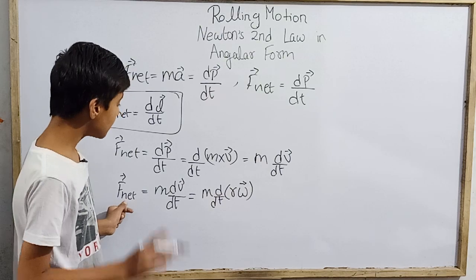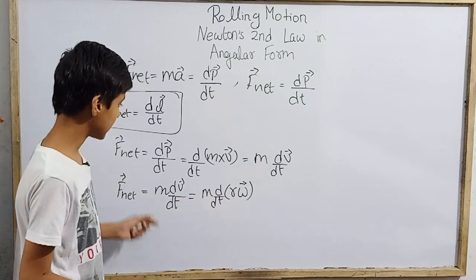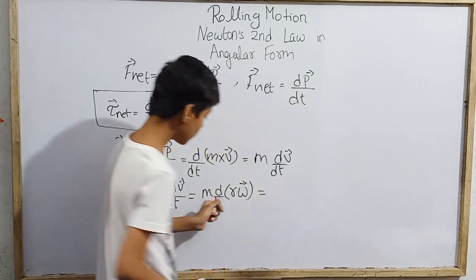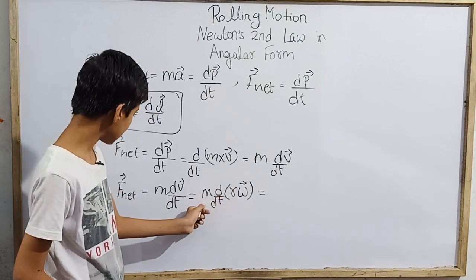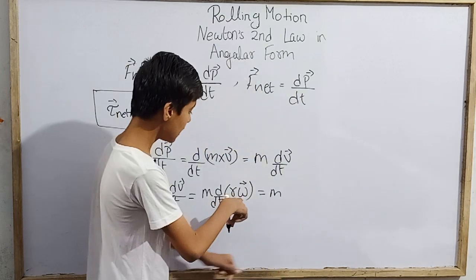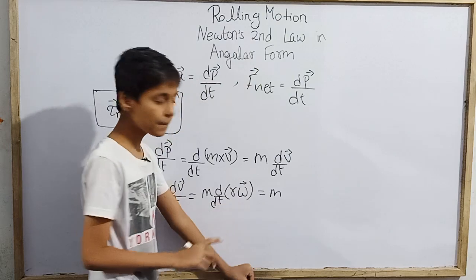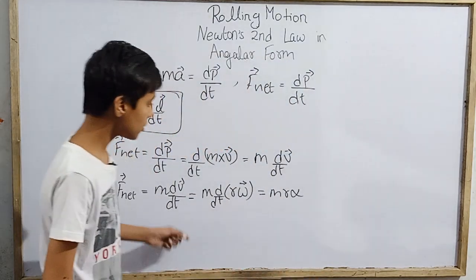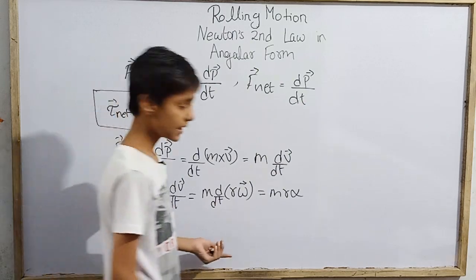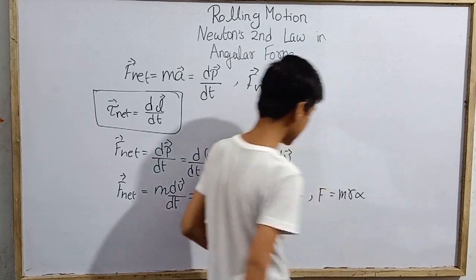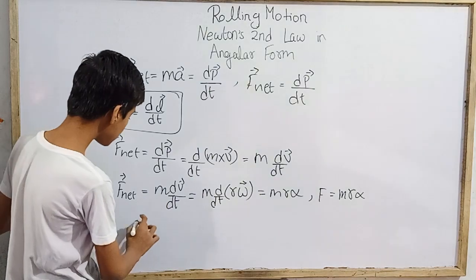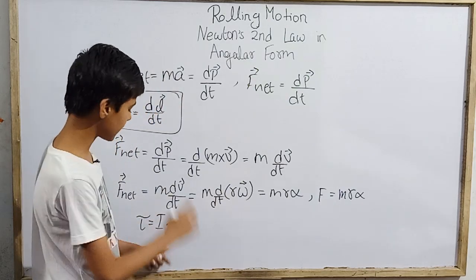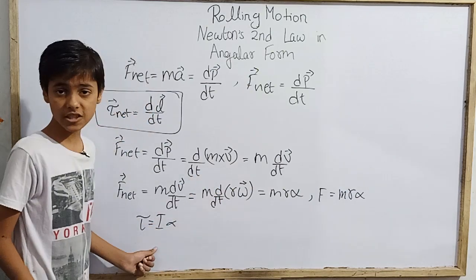Continuing, if we keep the radius r constant, we get m times r times d(ω)/dt. Now d(ω)/dt is angular acceleration α. So this gives us F_net = m·r·α. If we then multiply both sides by r, we get τ_net = m·r²·α, which equals I·α — the moment of inertia times angular acceleration.